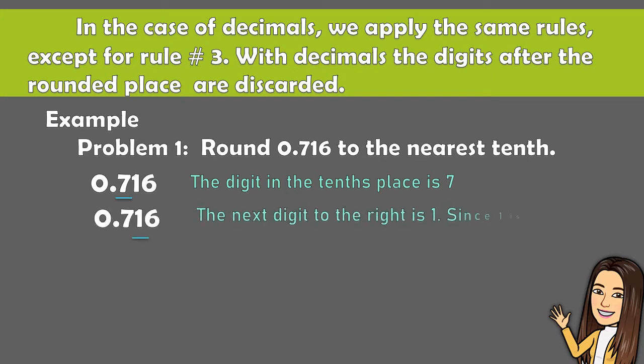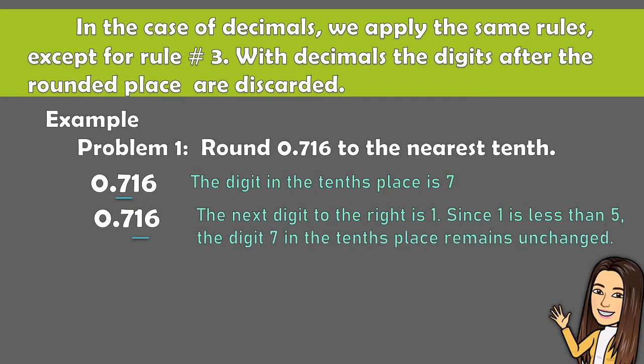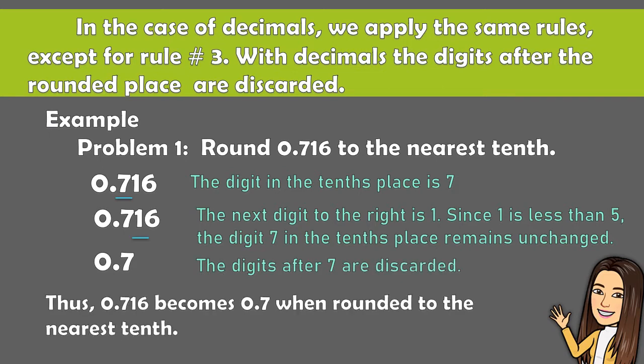The next digit to the right is 1. Since 1 is less than 5, the digit 7 in the tenth place remains unchanged. And that is 7 tenths, the digits after 7 are discarded. Thus, 0.716 becomes 0.7 when rounded to the nearest tenths.